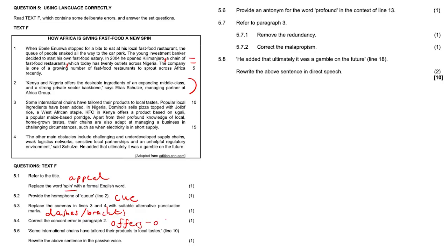5.5, 'Some international chains have tailored their products to local tastes'—that's going to be in line 10. Rewrite the above sentence in passive voice. So the object here is going to be 'their products,' so 'their products have been tailored' because past tense, 'to local tastes by some international chains.' So 'their products have been tailored to local tastes by some international chains.' So start with the object, subject shifts, go with the verb. So 'their products have been tailored'—make sure it's in past tense—'to local tastes by some international chains.'